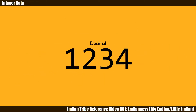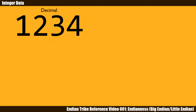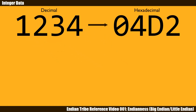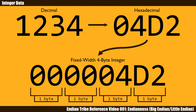Suppose we would like to store the following decimal number in memory: 1234. How will we do it? First, we need to convert it into hexadecimal, as this is typically how the machine portrays numbers to us humans. In C language, a signed integer takes up 4 bytes of space regardless of the actual size of the number.